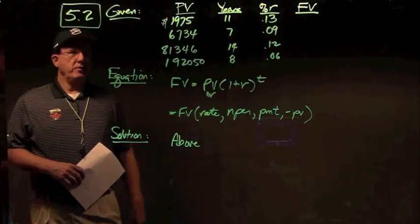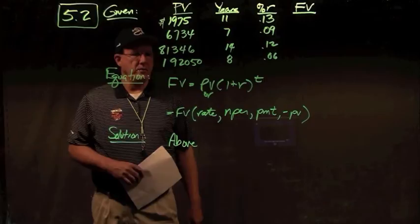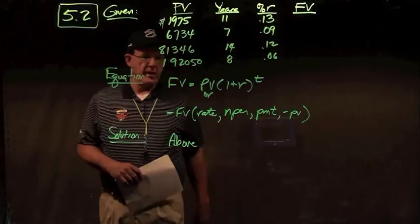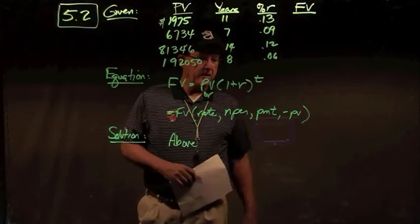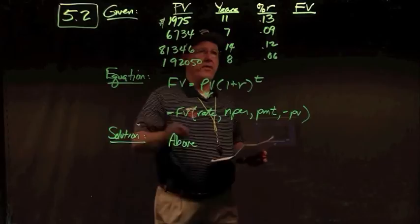In problem 5.2, we're given a series of present values, years, and interest rates, and we want to find the future values. The formula is: Future Value equals Present Value times (1 plus r) to the t. In Excel: =FV(rate, nper, payments, -PV). Note that present value must be entered as a negative in Excel.